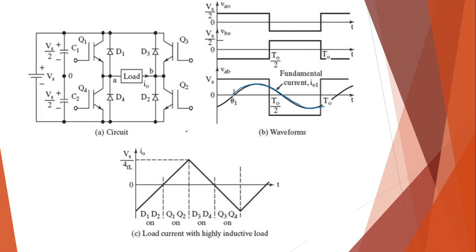During this particular portion, in mode 1, both your voltage as well as your current are negative. Q1 and Q2 were on, and then you have forcefully turned off Q1 and Q2. But due to the presence of the inductance, the current still flows in the same direction — some amount of energy stored in the inductor causes the current to continue flowing in the same direction.